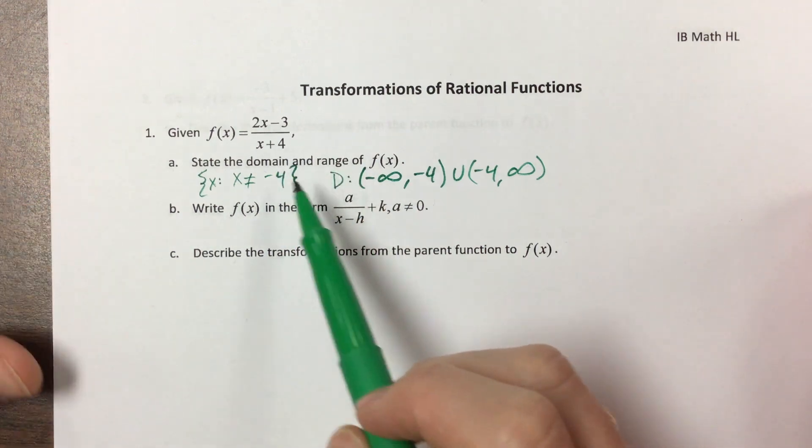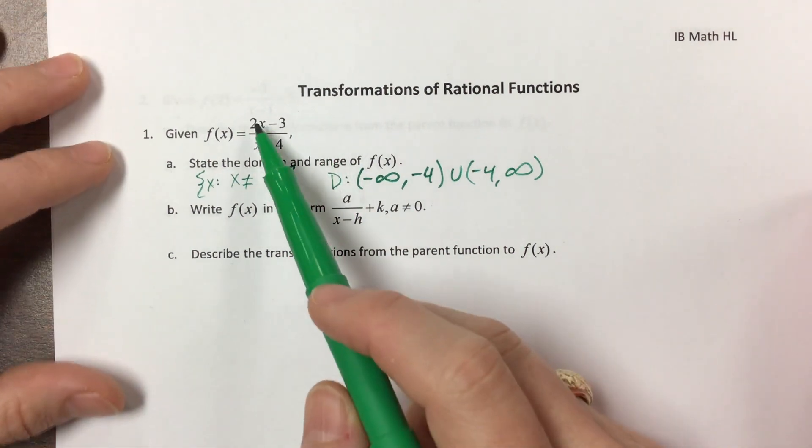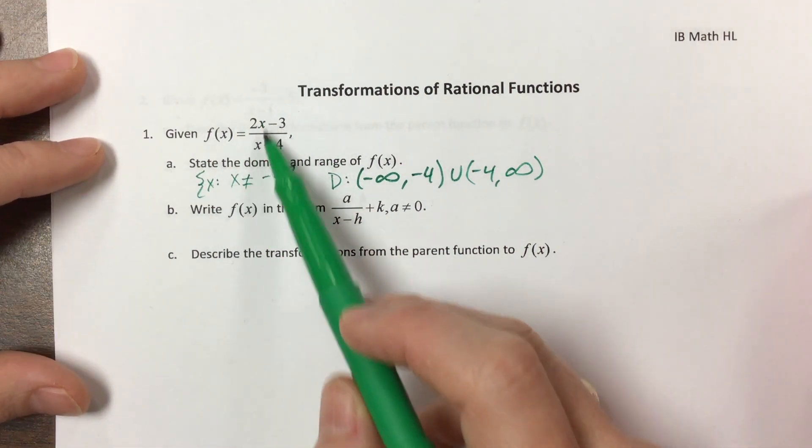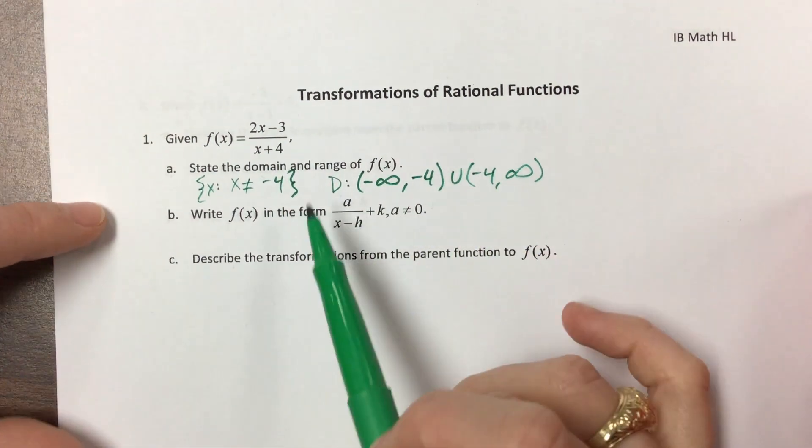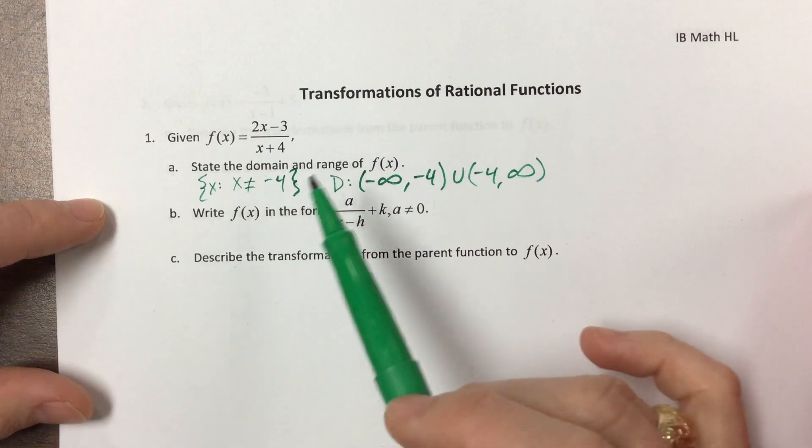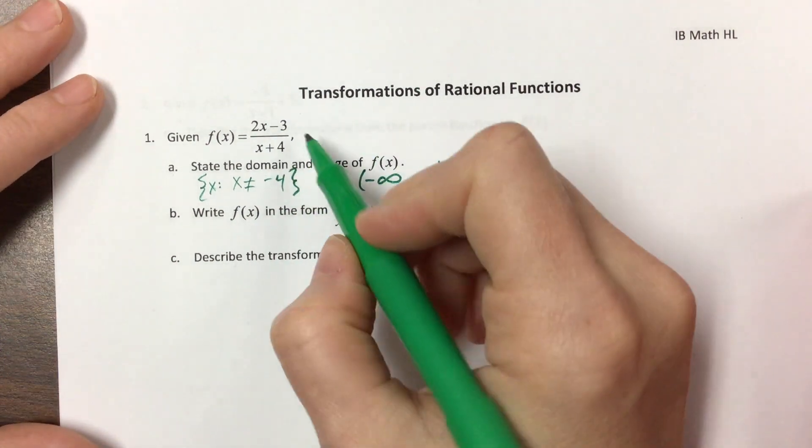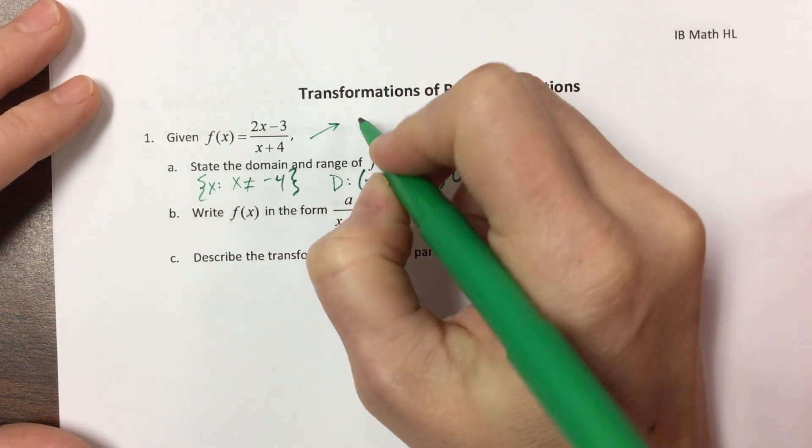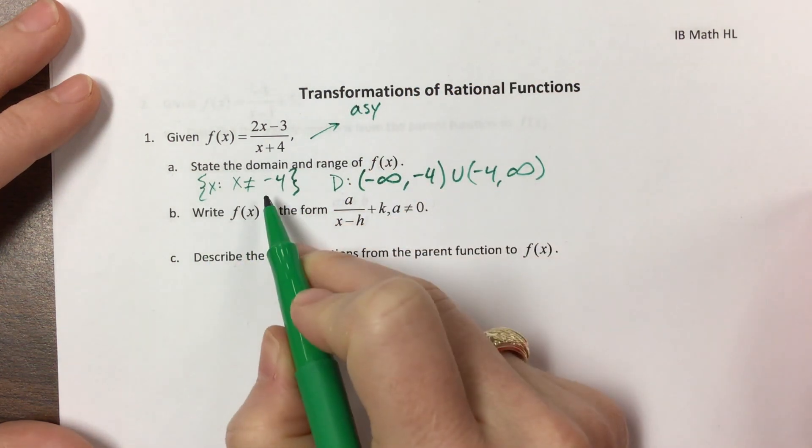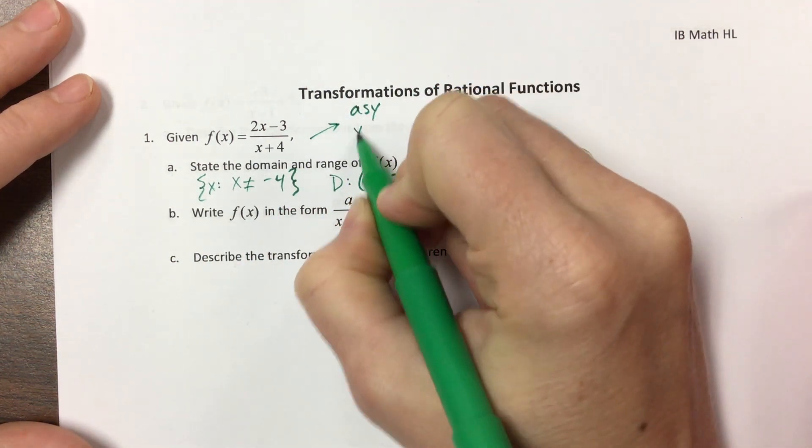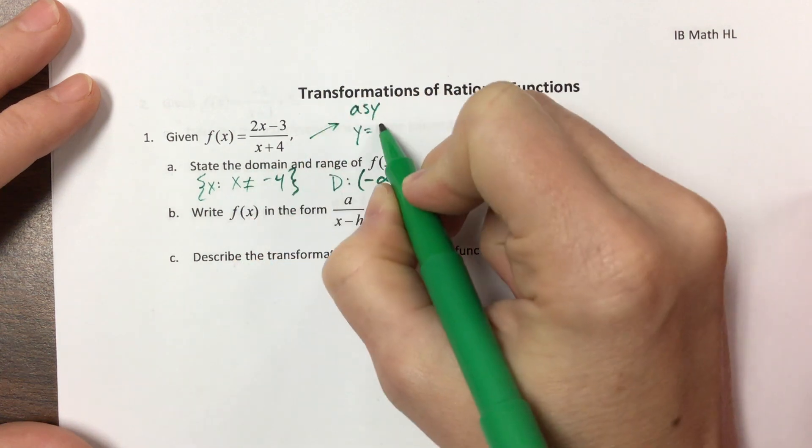We've seen rational functions in the past, and we might know that if you have the same degree top and bottom, you can divide the leading coefficients. But this activity here is going to kind of lead us through and show us why that's true. So you might already know that the range, we have an asymptote. By the way, this would have given us an asymptote. We have an asymptote at y equals, well, two over one is just two.